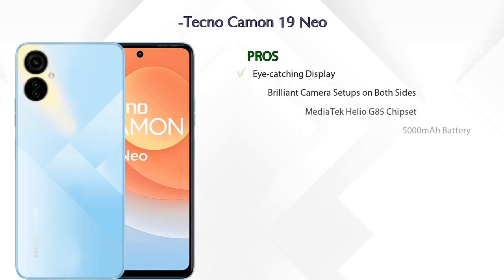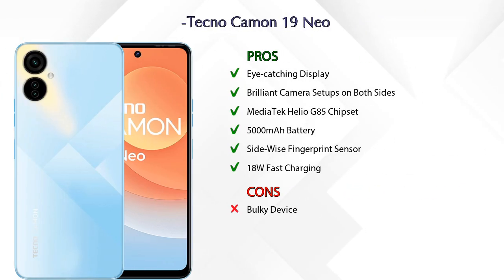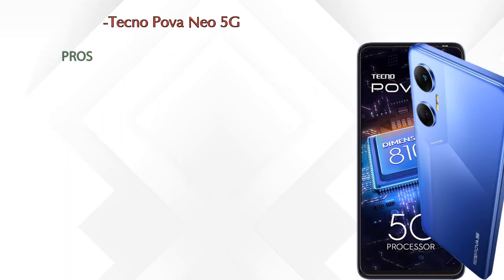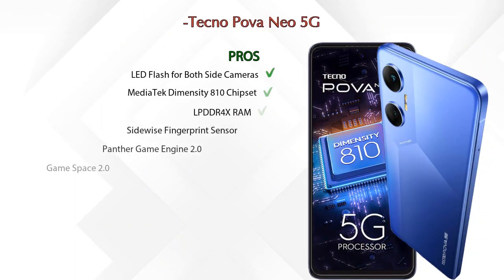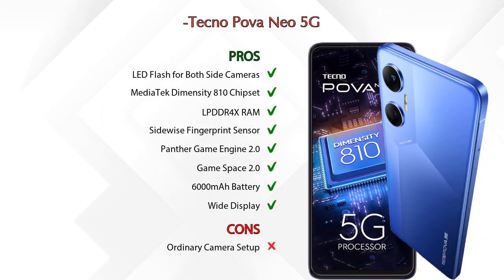Now let's talk about pros and cons. The Tecno Camon 19 Neo has 6 pros and 1 con, while the Tecno Power Neo 5G has 8 pros and 1 con.